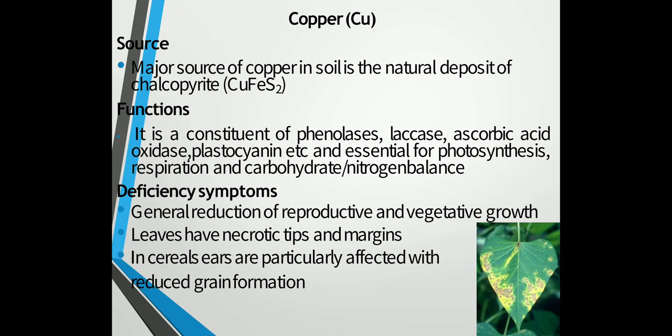The next micronutrient is copper. The major source of copper in the soil is the natural deposit of chalcopyrite. It is a constituent of a number of enzymes and is essential for photosynthesis, respiration and carbohydrate-nitrogen balance, commonly known as C-N balance. Deficiency symptoms include general reduction of reproductive and vegetative growth, leaves with necrotic tips and margins, and in cereals the ears are particularly affected with reduced grain formation.